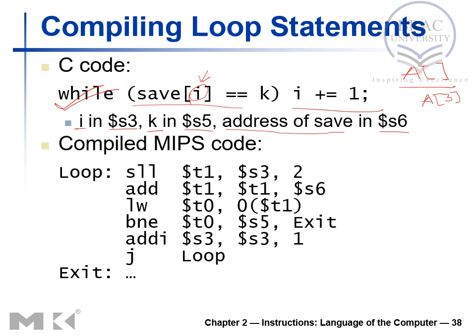For example, if we are trying to find the address of a[3] and the base address of array a is 100, then we need to add 100 and 4 multiplied by the index 3, giving a total memory address of 112. So memory address 112 will hold array element a[3]. This is a straightforward calculation when the index is an integer.